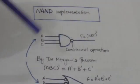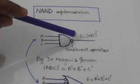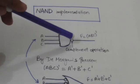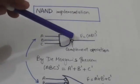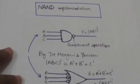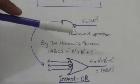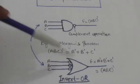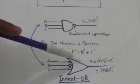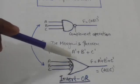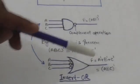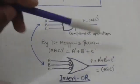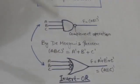This small circle in the NAND gate performs the complement operation. Wherever we find this small circle in any logic gate or logic diagram, it means that small circle performs the complement operation. Now look at this gate whose all inputs are complemented by these small circles — this is an invert-OR gate. These small circles perform complement operation and this gate performs OR operation, so the combined gate is invert-OR. The output of this gate is A' plus B' plus C'.